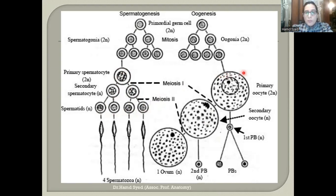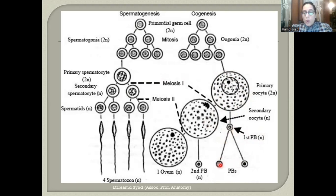In oogenesis, the primary oocyte is much larger than the primary spermatocyte. When meiosis I occurs, only one viable secondary oocyte is produced, while the other cell is a non-functional polar body that usually disintegrates. The secondary oocyte then gives rise to the mature ovum after meiosis II. So one primary oocyte yields only one viable mature ovum, contrasting with four spermatozoa in spermatogenesis.